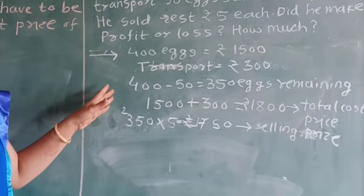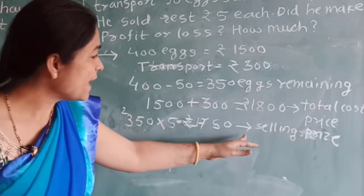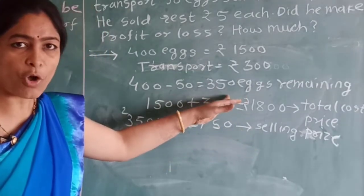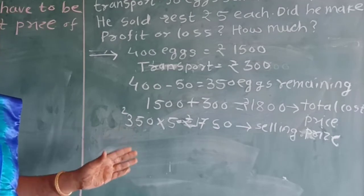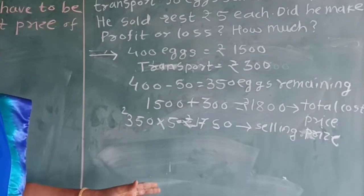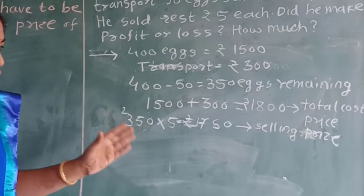Now, we can see that here, selling price is less than the cost price and we have learnt in first lecture that when selling price is less than the cost price, then there is a loss.